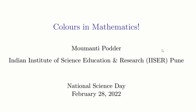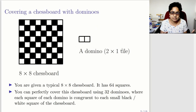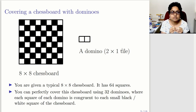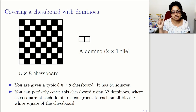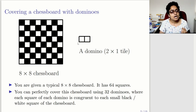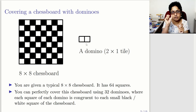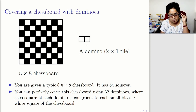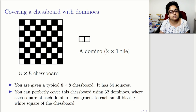We start with a typical chessboard — an 8×8 chessboard colored with alternating black and white squares, as most of you have probably seen. You are given a bunch of dominoes. Maybe most of you have played with jigsaw puzzles — you can think of dominoes as little pieces in jigsaw puzzles. Each domino is a 2×1 piece with two squares joined on one side, and each square of the domino is congruent to each small square of the chessboard.